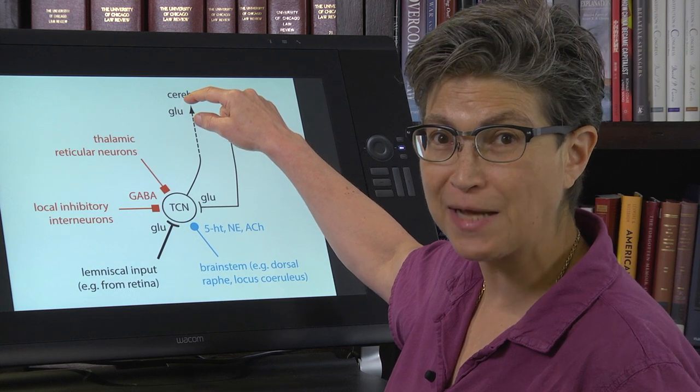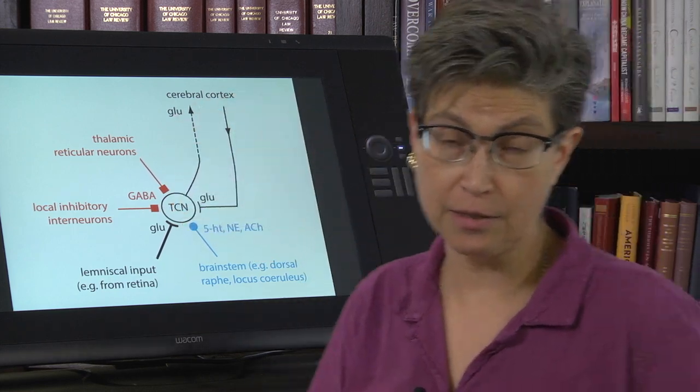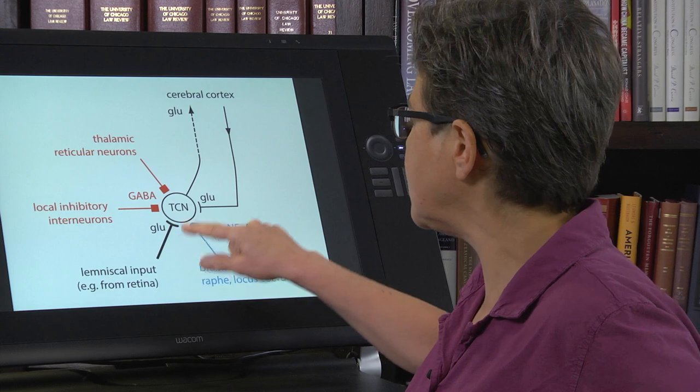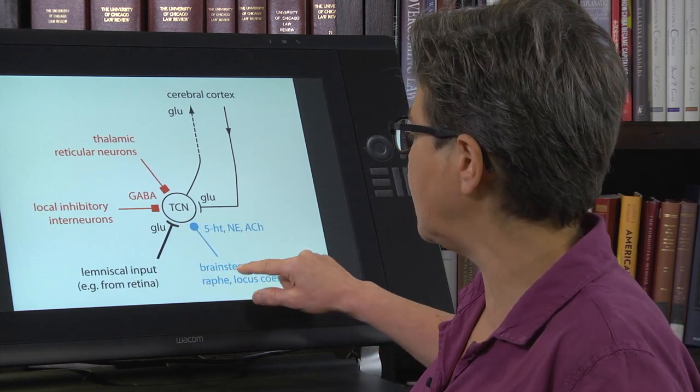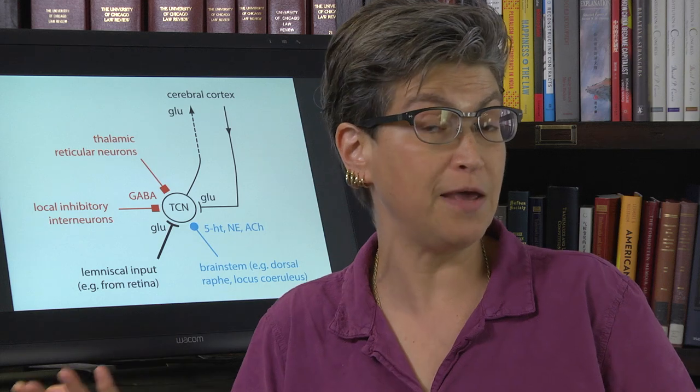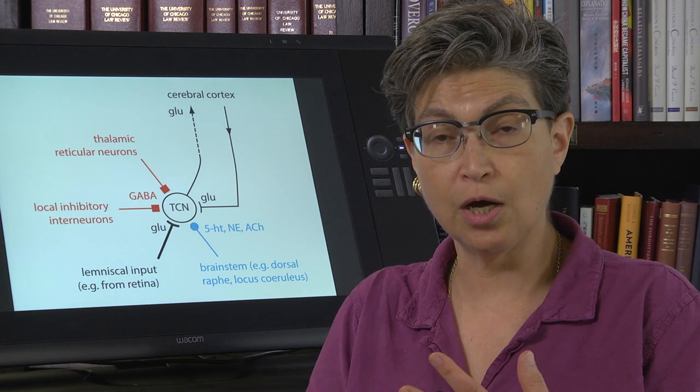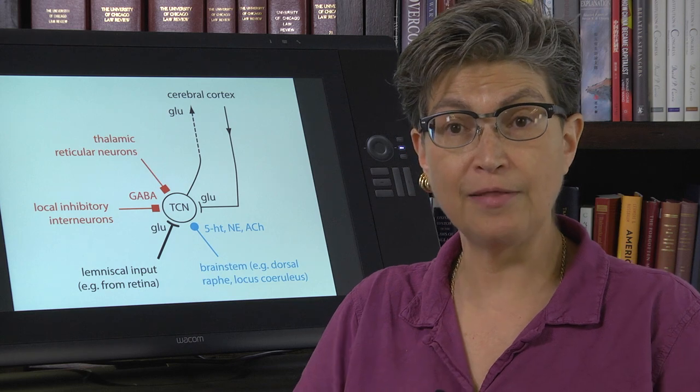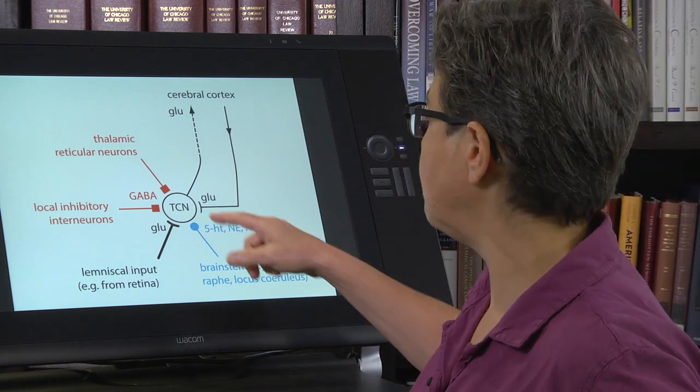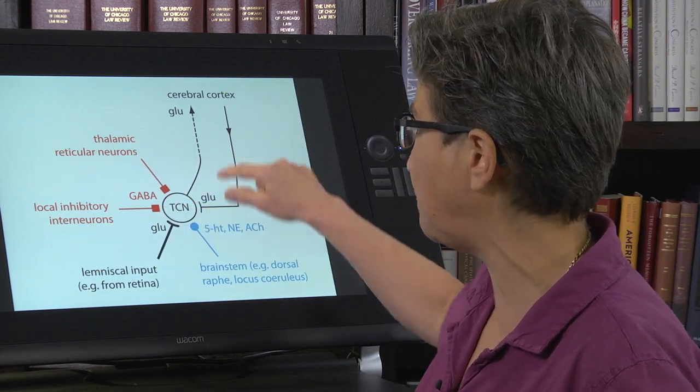Most of what this thalamic core thalamocortical neuron receives is not the information that it's supposedly passing on to the cerebral cortex. A thalamocortical neuron is the principal neuron in each of these dorsal thalamic nuclei. What does it get besides the lemniscal input? It gets input from places in the brainstem that give it information about behavioral state - inputs from nuclei that contain serotonin, acetylcholine, dopamine. This can tell you whether the person is sleepy, asleep, or aroused. It also gets input from inhibitory interneurons and critically, it gets input back from the cerebral cortex.